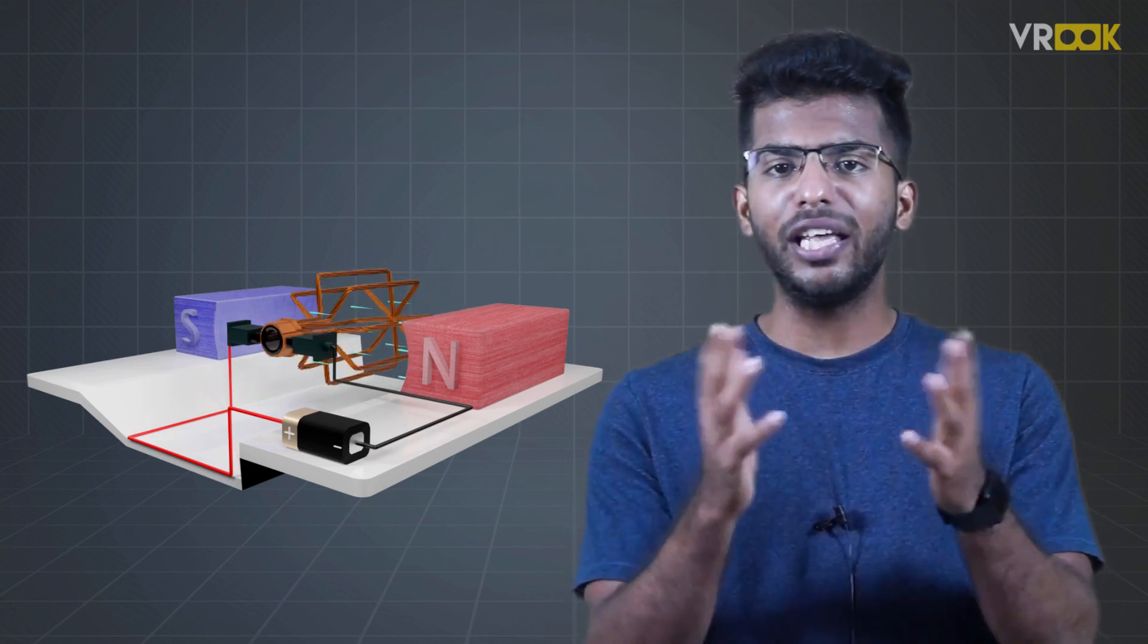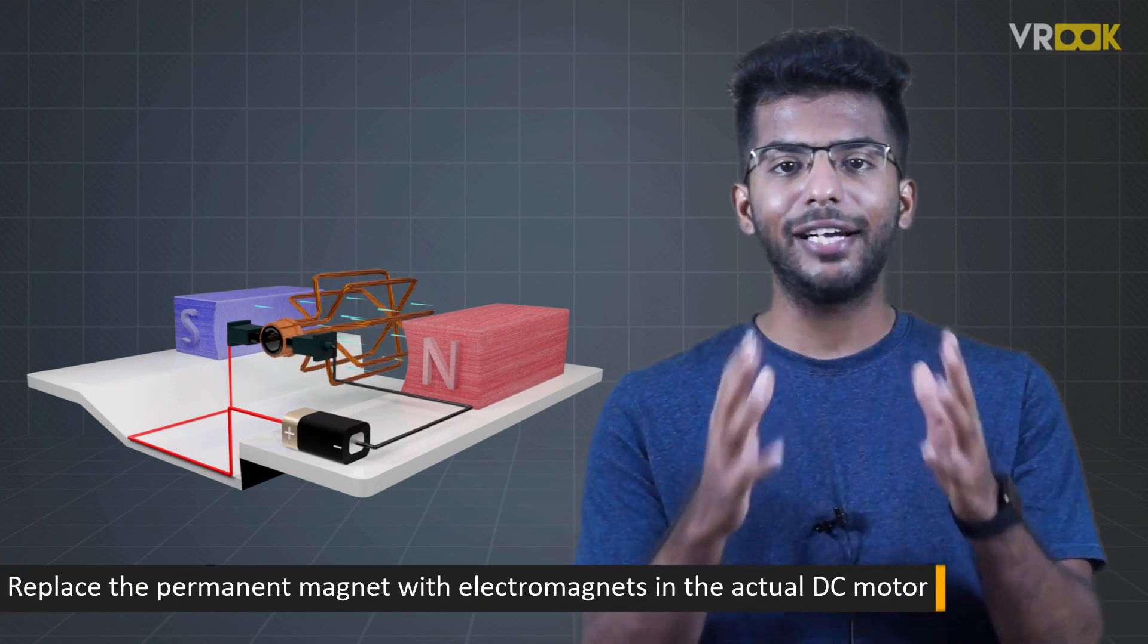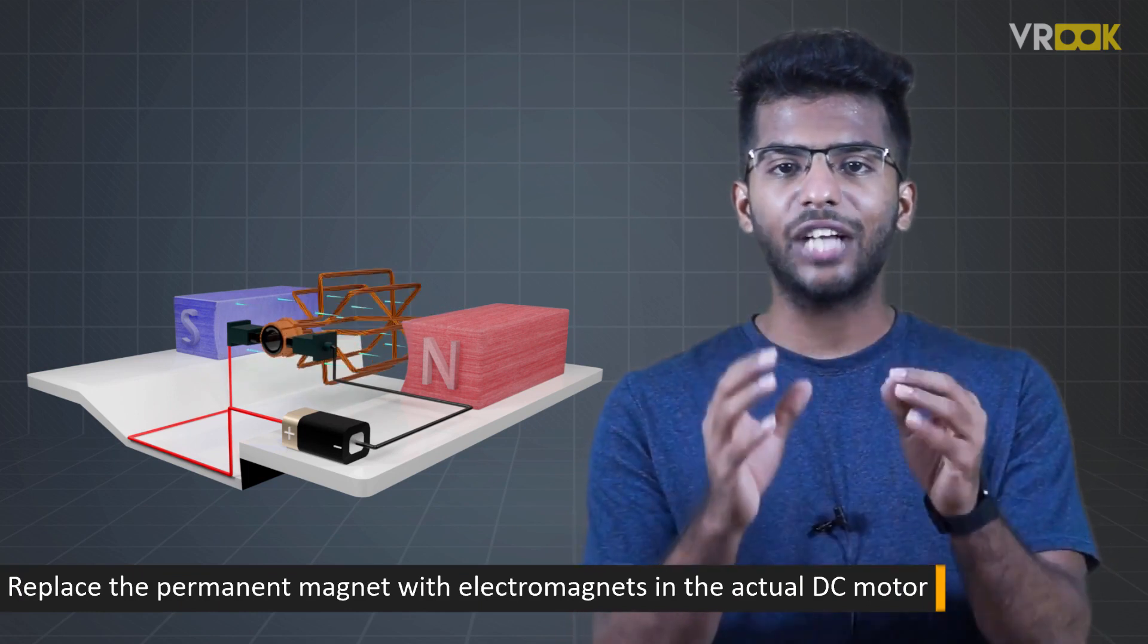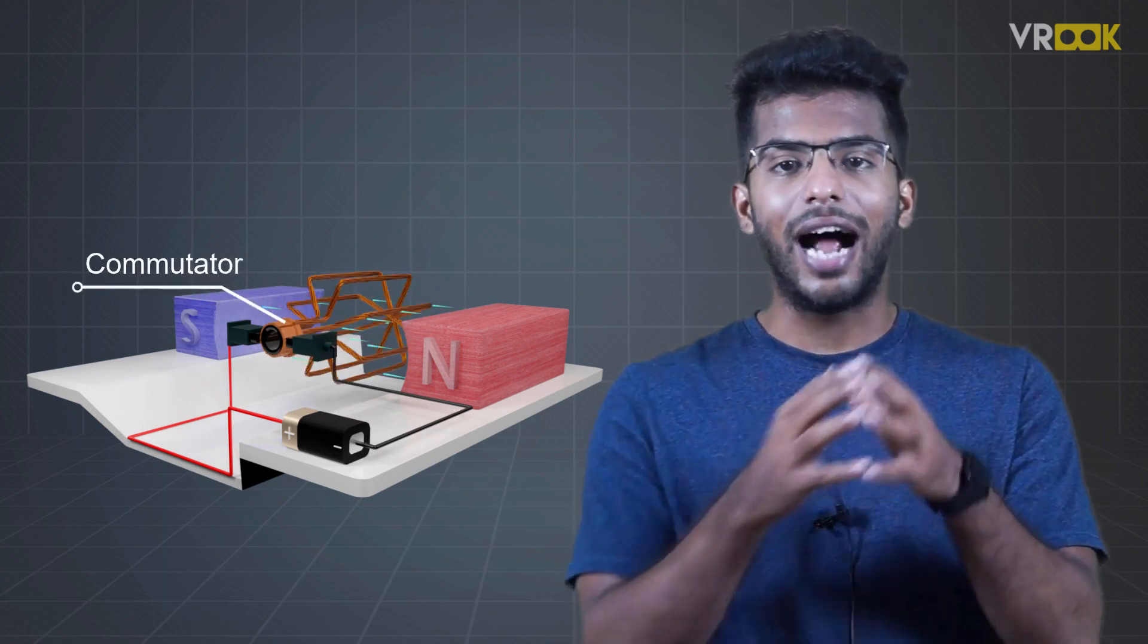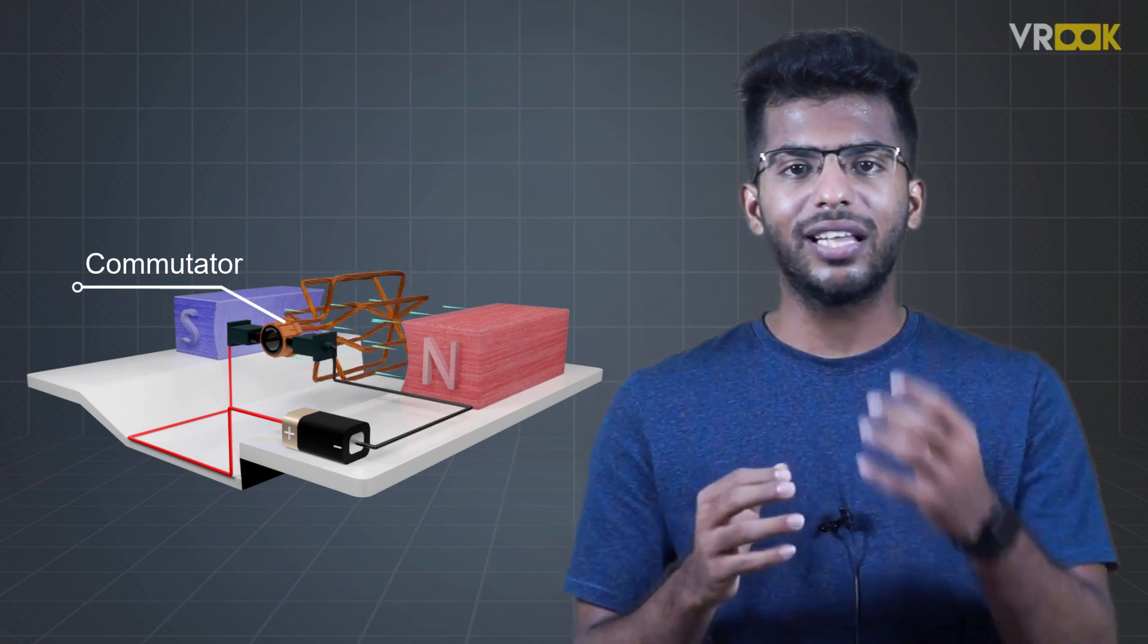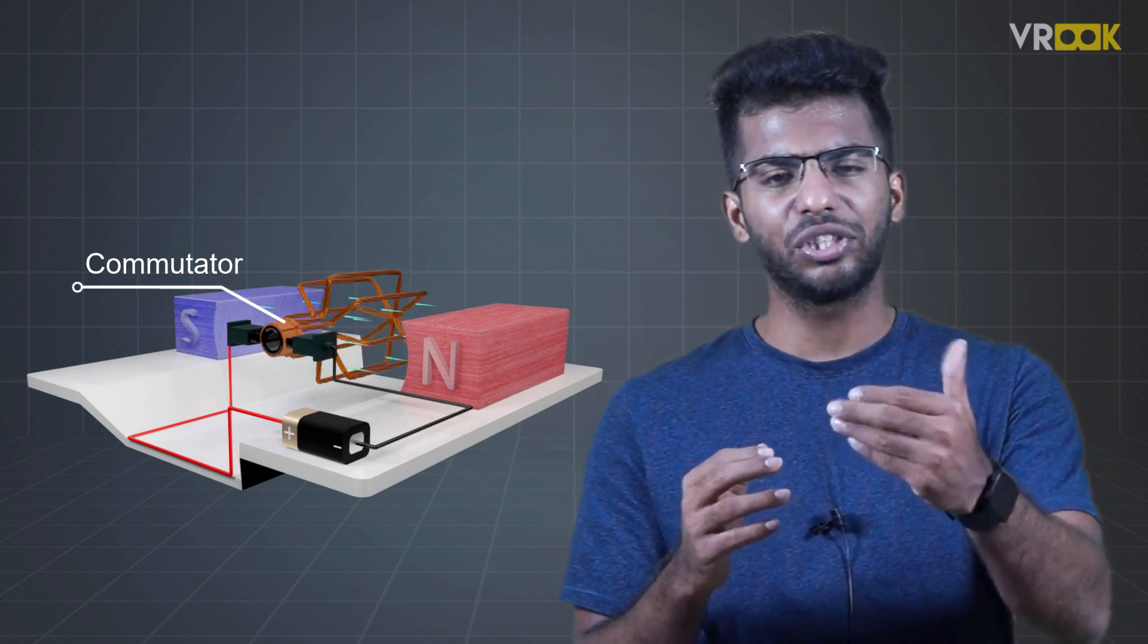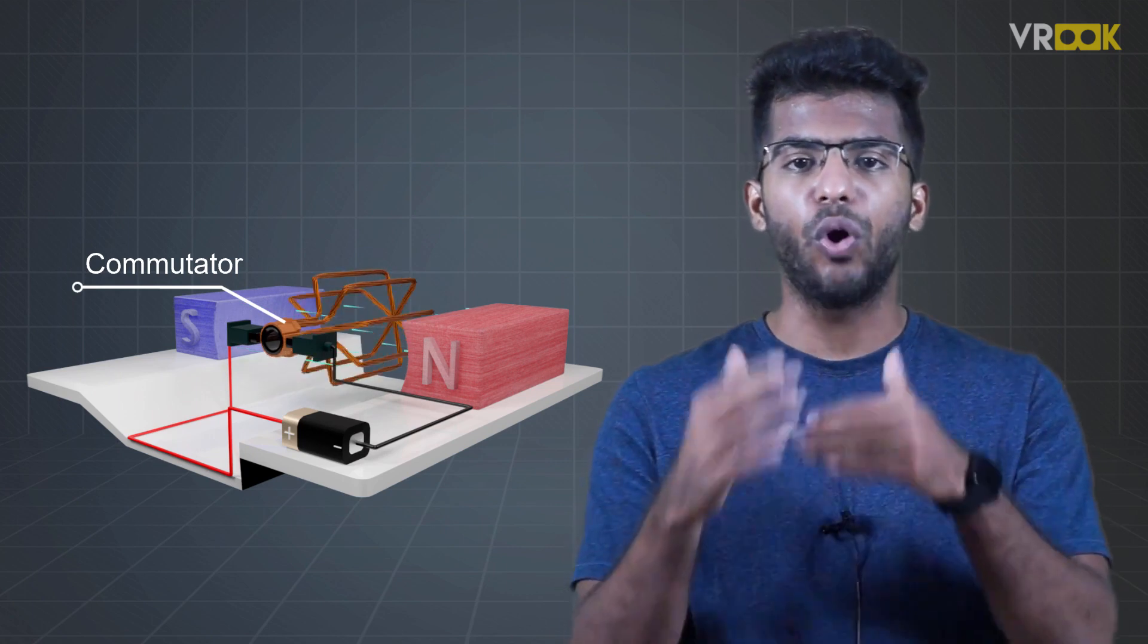Like this, we'll have many loops and we'll replace the permanent magnet with electromagnets in the actual DC motor. We also have the commutator attached at the end of the conductors. They make sure that the current flows in the same direction in the conductor loop. Else, the motor action will be alternating.